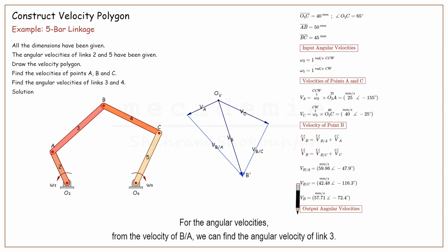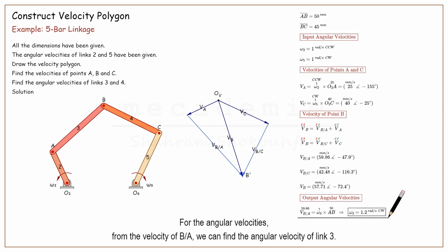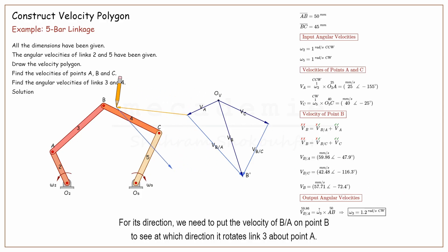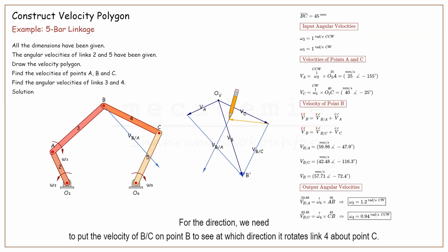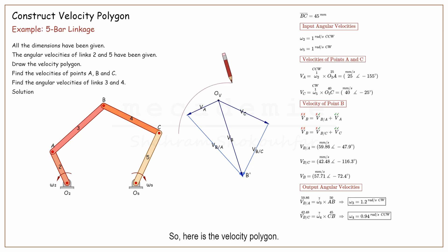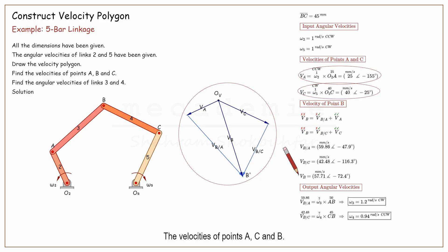For the angular velocities, from the velocity of B with respect to A, we can find the angular velocity of link 3. For its direction, we need to put the velocity of B with respect to A on point B to see at which direction it rotates link 3 about point A. Similarly, from the velocity of B with respect to C, we can find the angular velocity of link 4. For the direction, we need to put the velocity of B with respect to C on point B to see at which direction it rotates link 4 about point C. So here is the velocity polygon, the velocities of points A, C, and B, and the angular velocities of links 3 and 4.